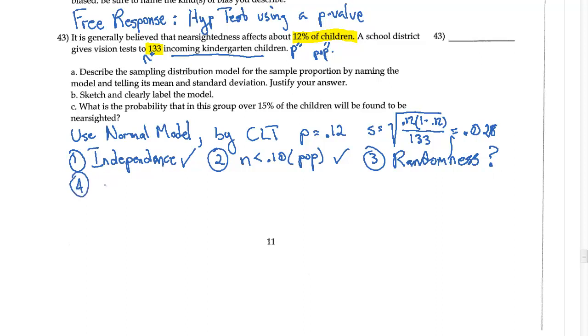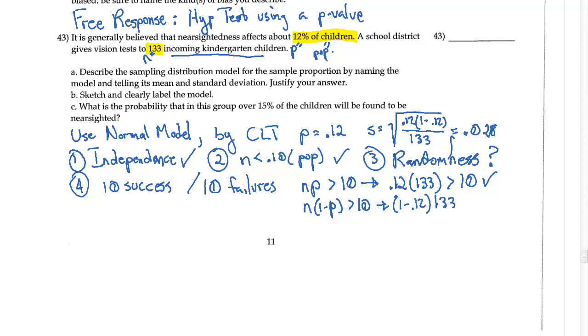And then four, certainly last but not least, I need at least 10 successes and at least 10 failures. So is n times p greater than 10? You've got 0.12 times 133, which is over 10, so you're looking at about 15, so that works. And then you have n times 1 minus p has to be greater than 10, so you have 1 minus 0.12 times 133, and that's definitely going to be greater than 10.